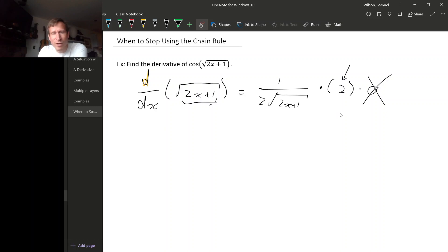So first of all, we can stop here. This right here is actually, we're done. The 2's cancel, you get 1 over the square root 2x plus 1.